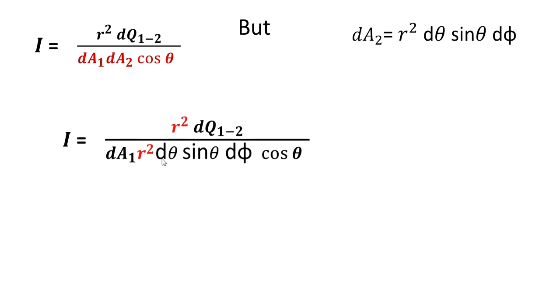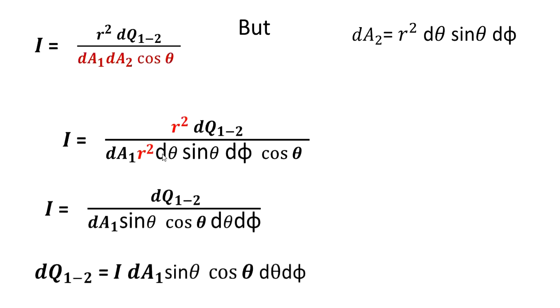dA_2 you put here, and then dA_1 in terms of dA_1 you will give. Therefore, dQ_{1-2} equals I dA_1 sin theta cos theta d theta d phi. Thank you one and all.